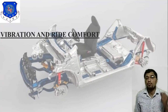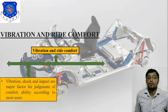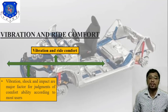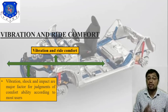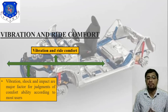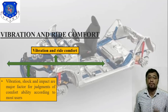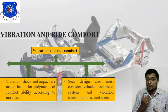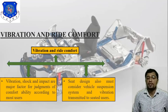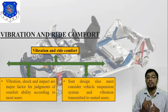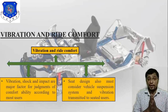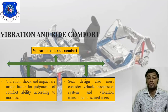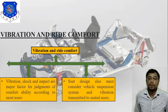The third factor is vibration and ride comfort. There are two tables attached here. Vibration, shock, and impact are the major factors for judging comfortability according to most users. Seat design must also consider the vehicle suspension system and the vibration transmitted to seated users. These are the different factors we need to consider for seat design.